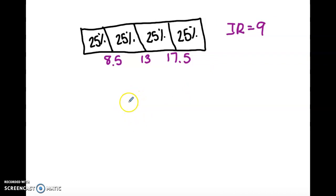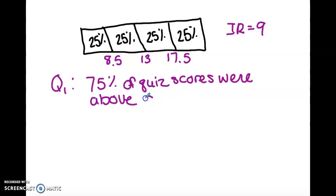Let's interpret Q1 first. So I'll interpret Q1, Q3, and the interquartile range. So something we could say about Q1 is that 75% of quiz scores were above an 8.5. So if I look here, Q1 is 8.5. 75% is greater than that. So 75% of the scores were above an 8.5.